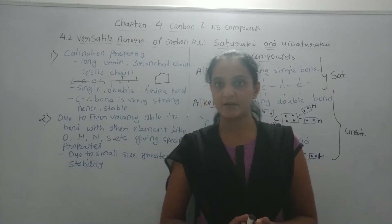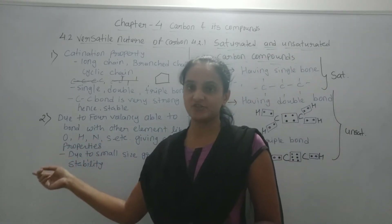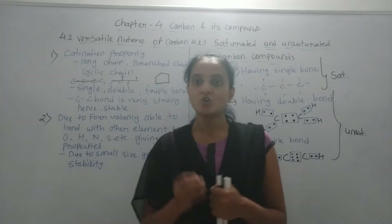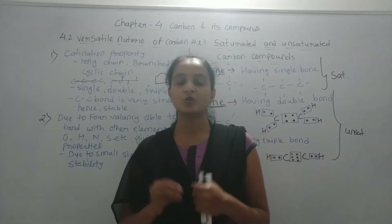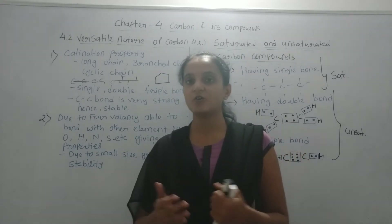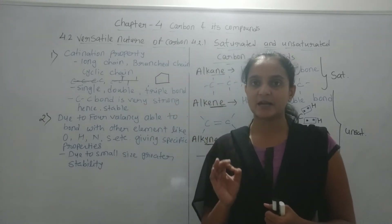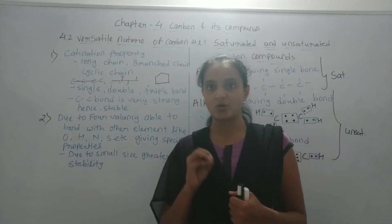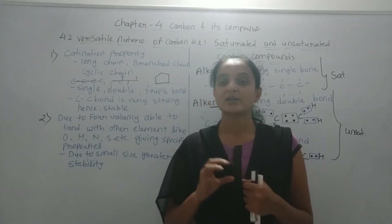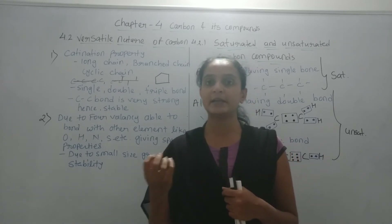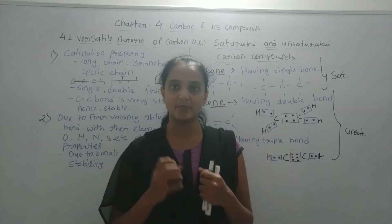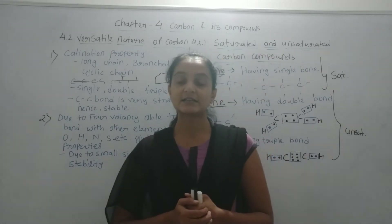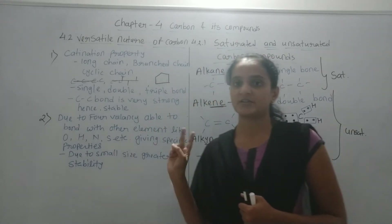Those specific properties depend on the element bonded with carbon. For example, if carbon bonds with oxygen it shows a particular kind of property, and similarly with nitrogen it shows a different kind of property. Also, the size of the carbon atom is very small, so the protons in the nucleus strongly attract electrons, giving it greater stability.